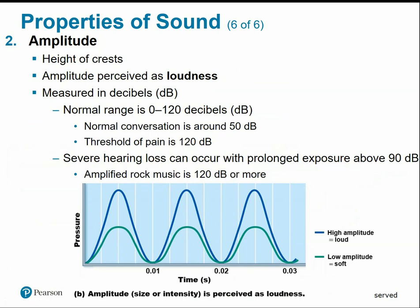Amplitude is the height of the waves and is perceived as loudness, measured in decibels with a normal range between 0 and 120. Normal conversational tone is about 50 decibels. The threshold of pain is around 120 decibels, and anything above 90 to 100 decibels will start to physically damage the structures of the inner ear that detect sound.